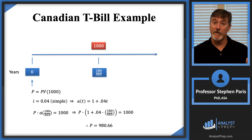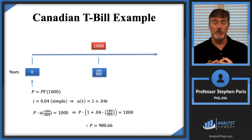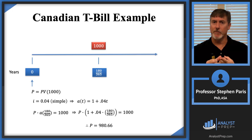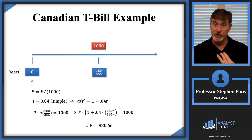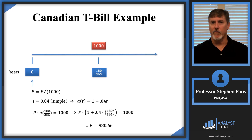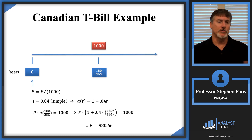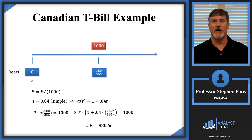When you have T-bill problems, you'll generally have four unknowns: the price, the redemption value, the quoted rate, and the time until it matures. These problems will give you three of the four and ask you to find the fourth, using the fact that the quoted rate is a simple interest rate based on a 365-day year.